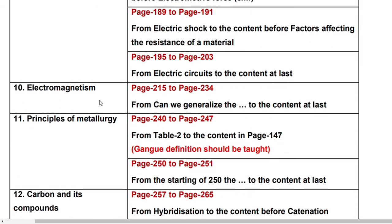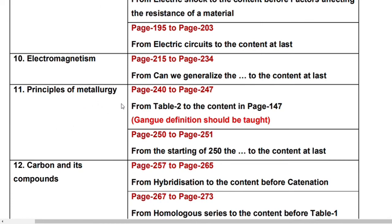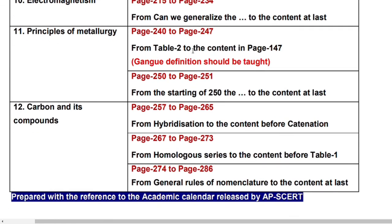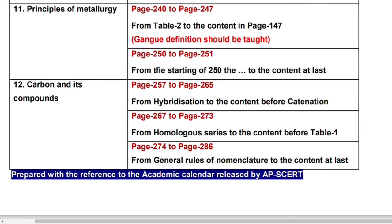Next chapter, Electromagnetism: from page number 232 to page number 234, from 'can we generalize' to the content at last. Principles of Metallurgy: page number 242 to page number 247 from the table to the content on page number 247. Gangue definition should be taught — you have to learn it. And page number 250 to page number 251 from the starting of page 250 to the content at last.